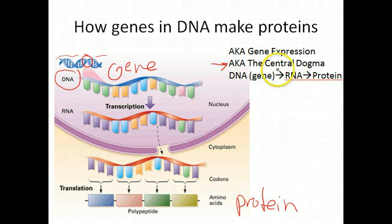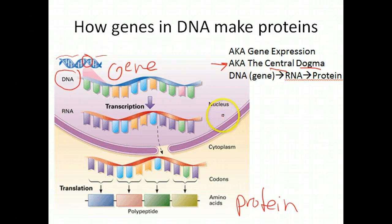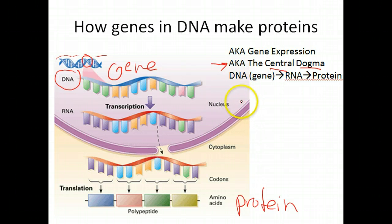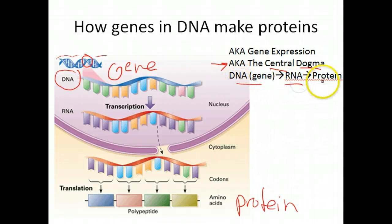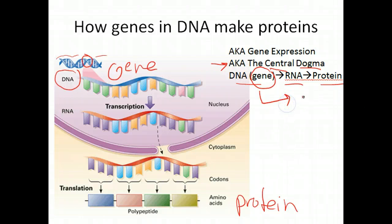Gene expression is also referred to as the central dogma. A dogma is an idea so important and longstanding that it's automatically assumed as correct — a longstanding principle. The dogma states that you go from DNA to RNA to protein when you're expressing genes. You go from the gene in your DNA to RNA, and then from that message in RNA you go to protein.